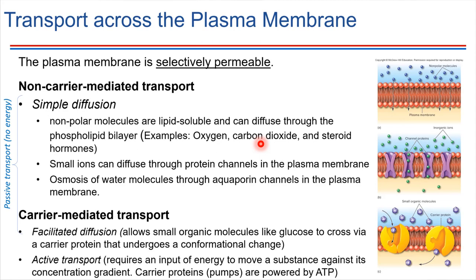Simple diffusion allows that to happen. There are also small ions and small polar things which can diffuse through the plasma membrane, but that's because there are special channels that allow them to diffuse through. So this doesn't require the ions to slide past the phospholipids directly — rather, there's a protein channel they can slide through. That's still called simple diffusion and still doesn't require an input of energy. We'll also be focused on water in this chapter — osmosis is another type of simple diffusion across the plasma membrane, made possible by special channels.